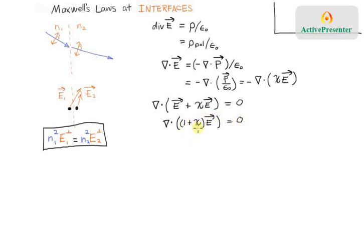But remember, one plus chi is our definition of refractive index squared, so that's now saying that the divergence of N squared times E is zero. So we've already got an N squared times an E, which looks like the form of our equation that I've told you we're going to be ending up deriving.